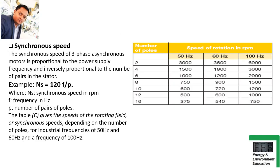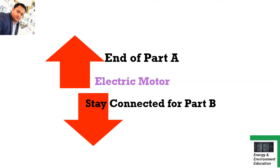An important formula to remember is Ns = 120f / P, where Ns is synchronous speed, f is frequency in hertz, and P is the number of pairs of poles. You may be asked to calculate synchronous speed in short-answer or objective questions. The examiner will provide the number of pairs of poles and frequency, and you will need to calculate synchronous speed using this formula. Please remember it — it's very important for objective questions in the examination.